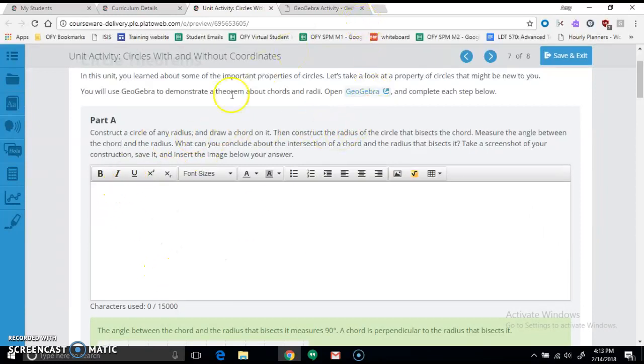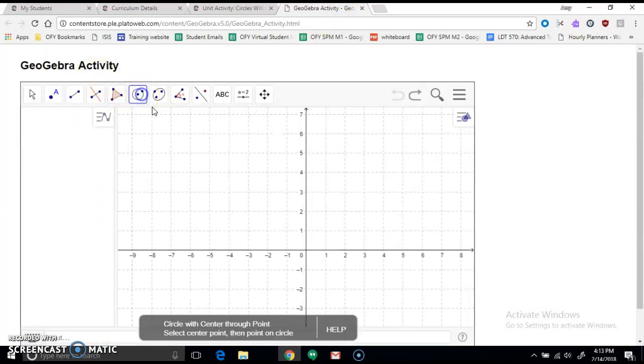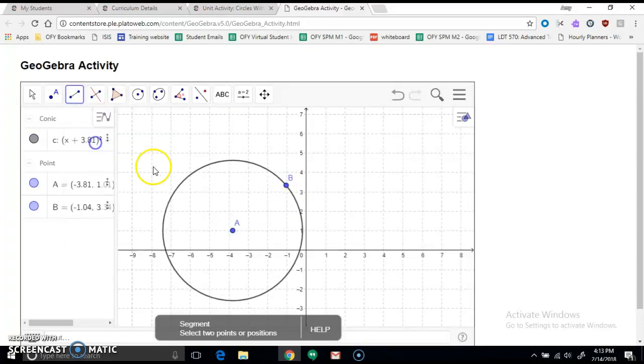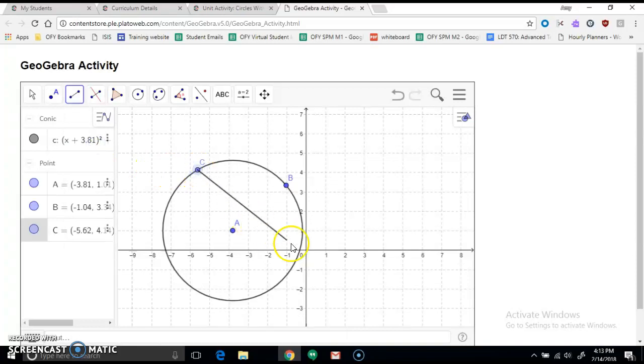So I've clicked on GeoGebra here, and it says construct a circle of any radius and draw a chord on it. So we're in our circle tool. I'm going to start here, and we're going to draw a chord, so we're going to make that a line segment. And a chord just goes from one side of the circle somewhere to the other side.